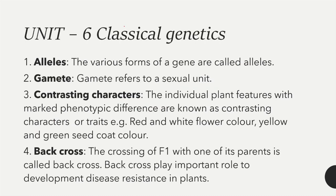The next unit is classical genetics — unit number 6. Some terminologies are given. The first is allele — the various forms of a gene. An allele is a pair of genes that occupy a specific location on a particular chromosome and control the same trait.